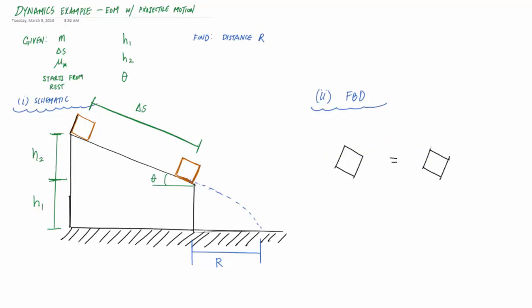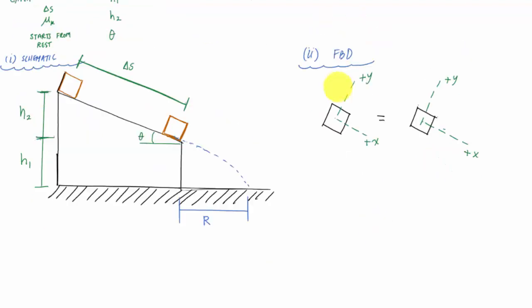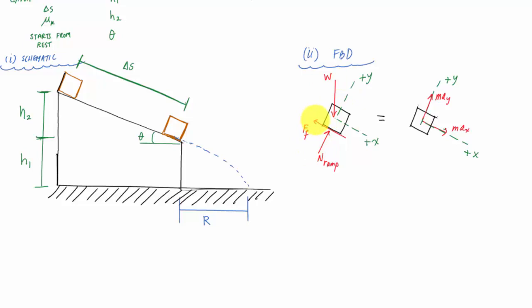I want to label my coordinate system. Positive x will be down the ramp and positive y will be perpendicular to that. The forces acting are the weight w, a normal force from the ramp, and a force of friction. For my inertial terms, I have m·ay and m·ax. Because this particle is being released from rest and all forces are constant — friction is not varying, normal force isn't varying, weight is mass times gravity — my acceleration will also be constant. And because the particle is only moving in one direction, the acceleration in y is zero.